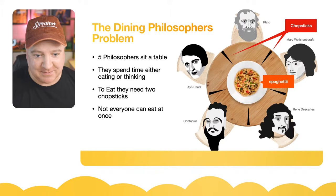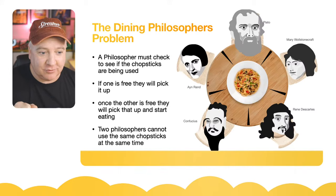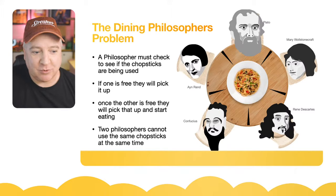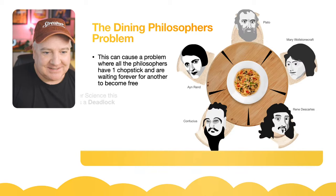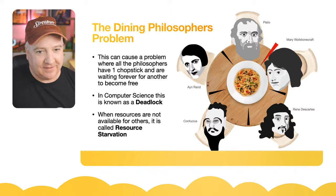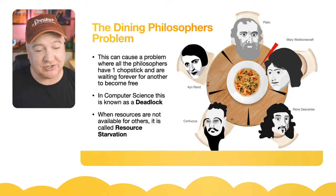If they all try to eat at the same time there's going to be a problem. A philosopher must check if the chopsticks are free, pick them both up, eat until satisfied, and put them back down. Two philosophers cannot use the same chopstick at the same time. If all philosophers each pick up one chopstick and wait for the other, we get a deadlock - a situation in computer science where code stops running because everyone is waiting on a resource held by someone else.